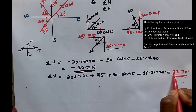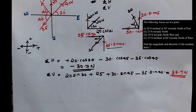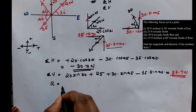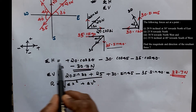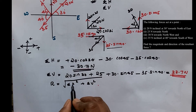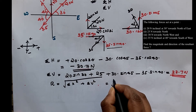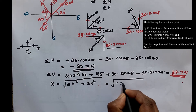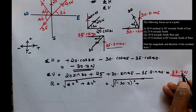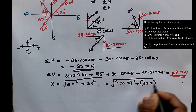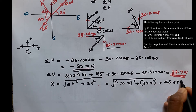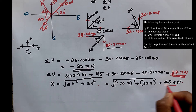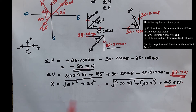Now we have sigma H and sigma V. The resultant equation is R equals the square root of sigma H squared plus sigma V squared. We calculate the square root of minus 30.7 squared plus 33.7 squared. The answer is R equals 45.6 N. Now we calculate the direction.